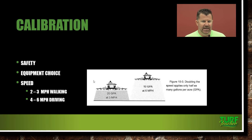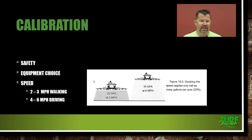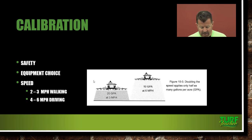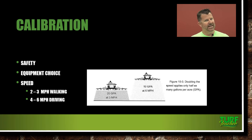When doubling your speed, you cut your application rate in half. A tractor with a boom sprayer putting out 20 gallons per acre at 3 miles per hour will only deliver 10 gallons per acre at 6 miles per hour. Slowing down produces a higher rate — so when you're tired in the afternoon and slowing down, you're putting out more chemical than needed, which violates the law.